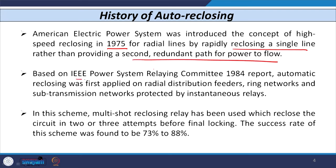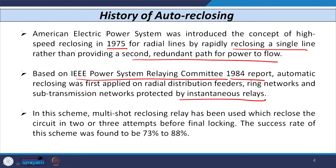The IEEE Power System Relaying Committee in a 1984 report mentioned that auto reclosing systems can be applied on radial systems, ring networks, and sub-transmission and transmission networks using instantaneous relays — whether instantaneous overcurrent relays, distance relays in the first zone, or pilot relays. In this scheme, a multi-shot reclosing relay is used, and the success rate was found to be around 73 to 88 percent, tremendously increasing service continuity and system stability.